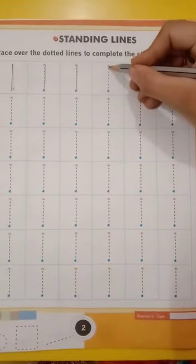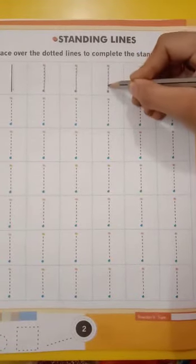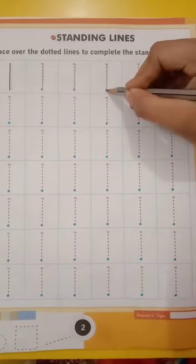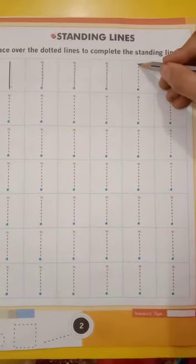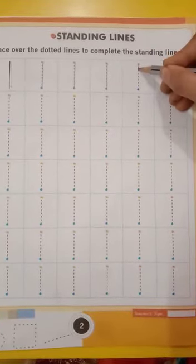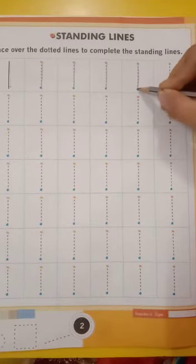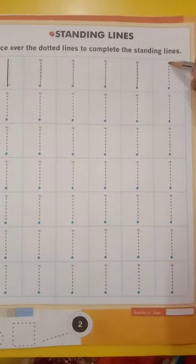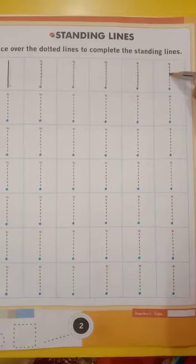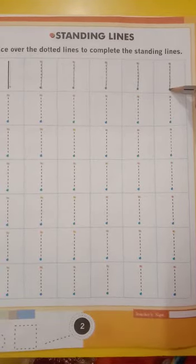Start from the top and make a line to the bottom. Start from the top and make a line to the bottom. Start from the top and make a line to the bottom.